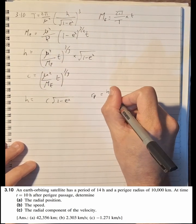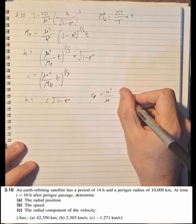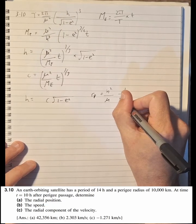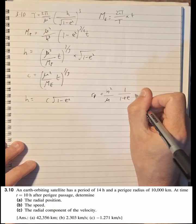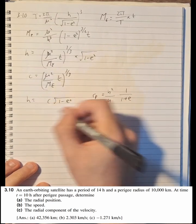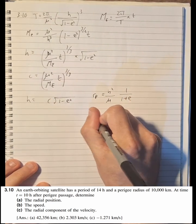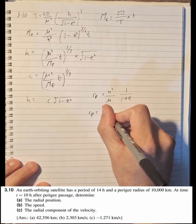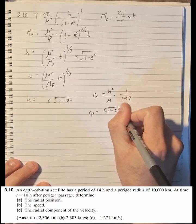Because r_p = h²/μ × 1/(1+e). And now when we put this in there we're going to get r_p = c² × (1-e²)^(1/2) × 1/(1+e).